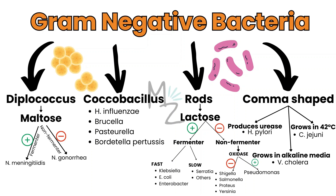Comma-shaped bacteria are further subdivided based on certain criteria: if a bacterium produces urease it's H. pylori; if it grows in alkaline media it's Vibrio cholerae; and if it grows at 42°C it's Campylobacter jejuni.